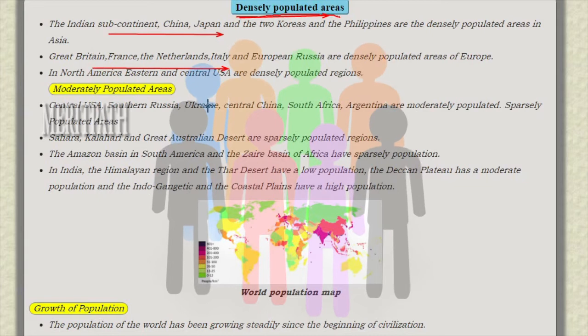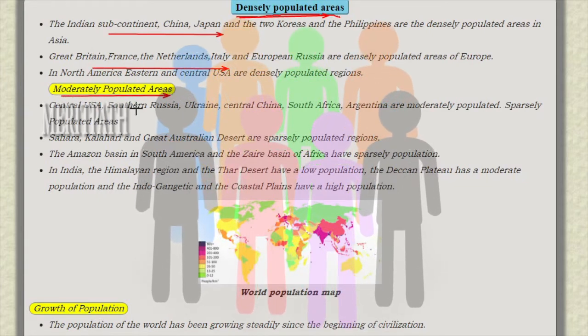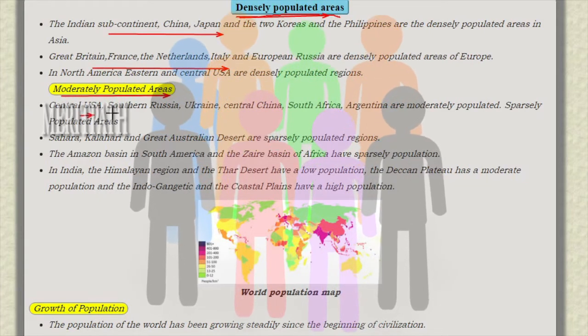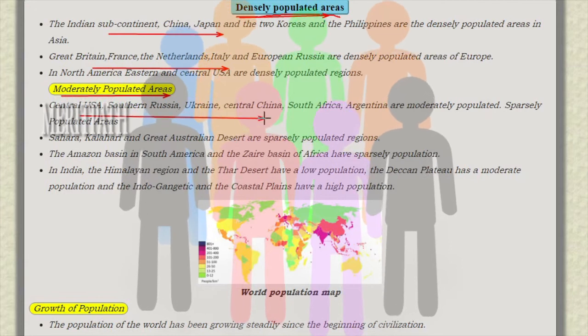Central USA, Southern Russia, Ukraine, Central China, South Africa, and Argentina are referred to as moderately populated areas. Sahara, Kalahari, and the Australian desert are sparsely populated regions.